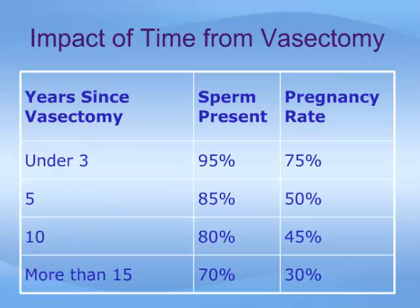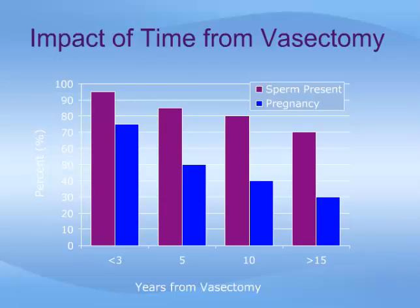This table outlines the importance of time following vasectomy. With less than three years passed since vasectomy, technical success — meaning the ability to reconnect the tubes and have sperm present in the semen — can be as high as 97% in the most experienced hands, and the pregnancy rate can be as high as 76%. These numbers drop with time, to the point where at 15 years, sperm are present in the semen only 71% of the time, and the pregnancy rate falls to about 30%. This slide shows how the chance of successful reversal decreases as the years go by after vasectomy.